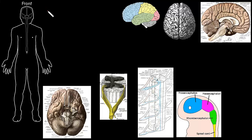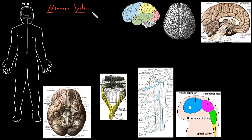In this video I'm going to introduce the structure of the nervous system. The nervous system is divided into two main structural parts. The first is called the central nervous system, and the second is called the peripheral nervous system — central and peripheral.